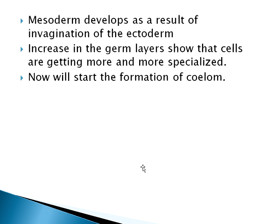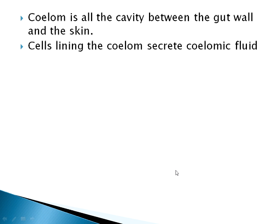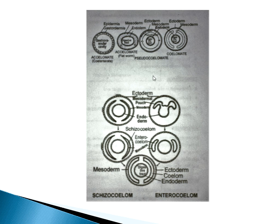Platyhelminthes are acoelomate, nematodes are pseudocoelomate. Annelids, arthropods, and molluscs are schizocoelous, and echinoderms and chordates are enterocoelomate — possessing the true coelom. The schizocoelom develops due to a split in the mesodermal cells. Let me explain this further — the schizocoel develops on one side of the diagram and the enterocoel on the other.